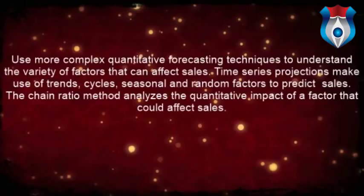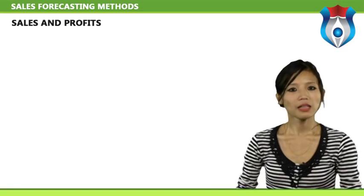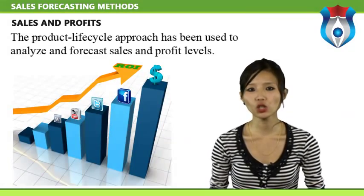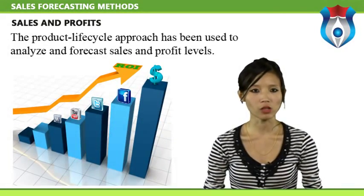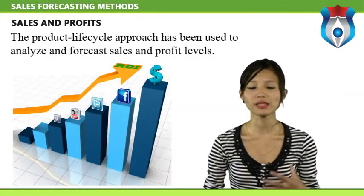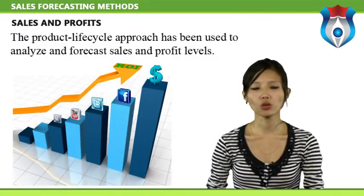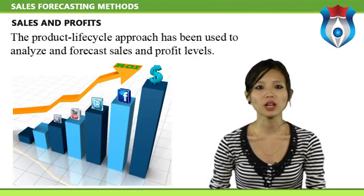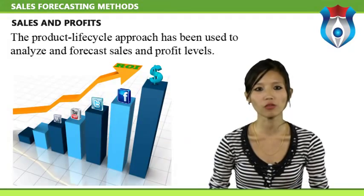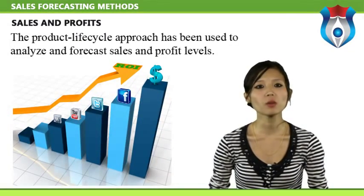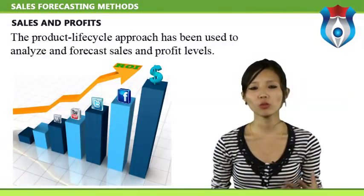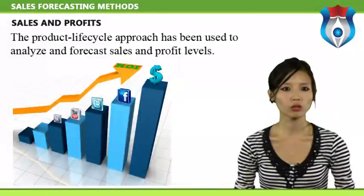Let us now talk about sales and profits. The product life cycle approach has been used to analyze and forecast sales and profit levels. The life cycle of a new product is characterized by four stages: introduction, growth, maturity, and decline. The introduction stage is when the product is first marketed and sales are less than 5% of market share; during this period profits improve from negative to positive. In the growth phase, sales volume increases rapidly and positive profits continue to increase.